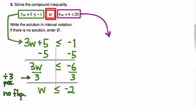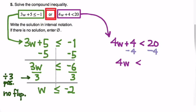Now let's solve the second inequality: 4w plus 4 is less than 20. The first step is to subtract 4 from both sides, giving 4w is less than 16. Then divide by 4. Do we need to flip the sense of this inequality? No, because we divided by a positive 4. So we get w is less than 4.